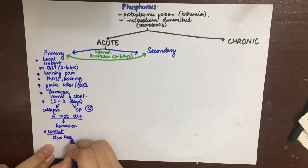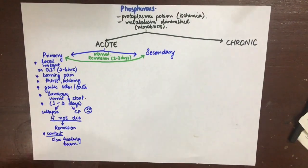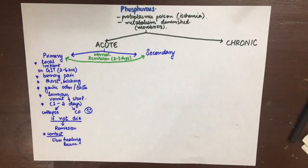In case of contact poisoning, the contact areas show burns which show slow healing.